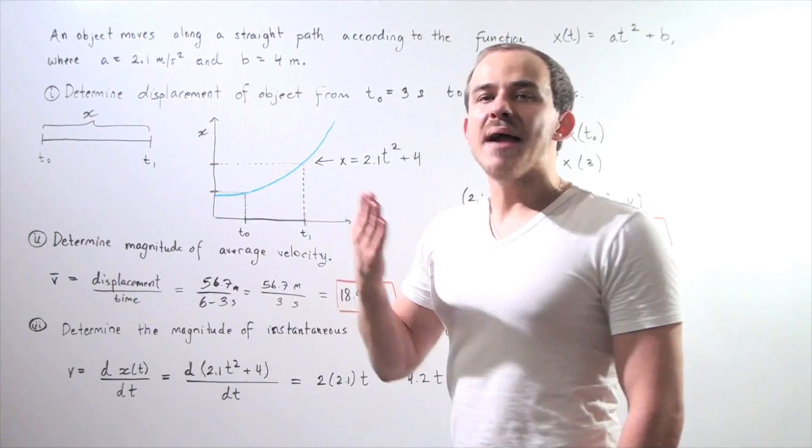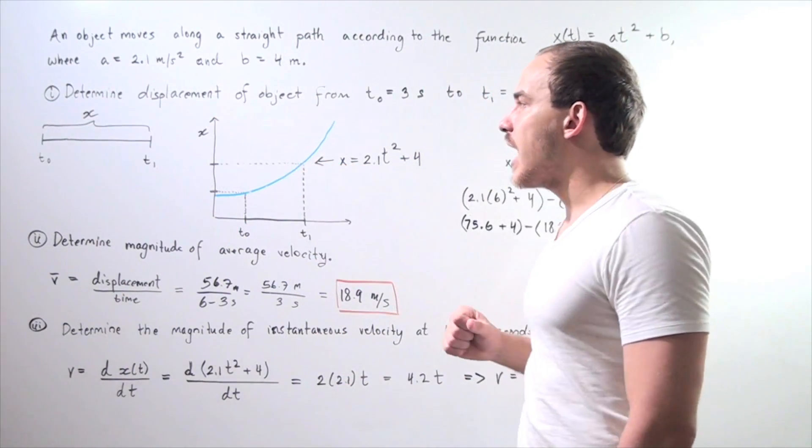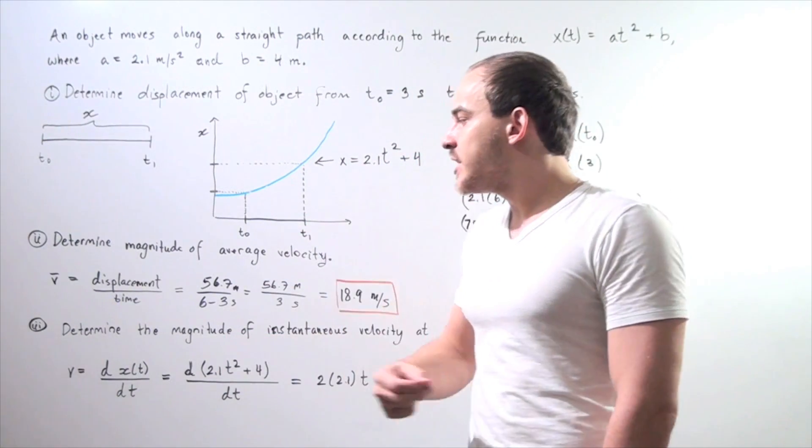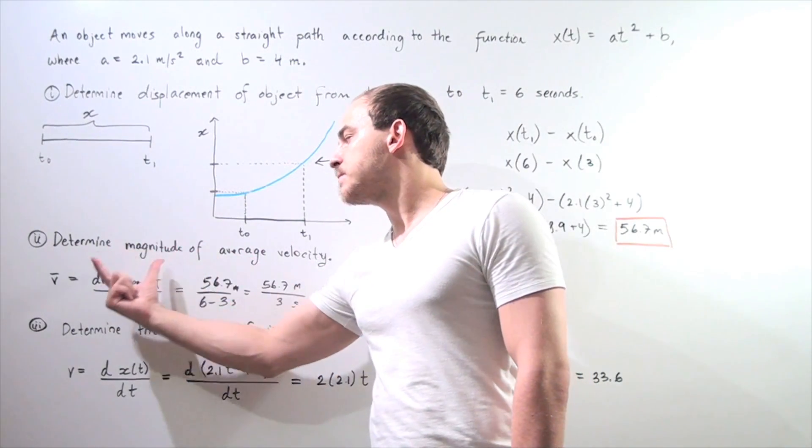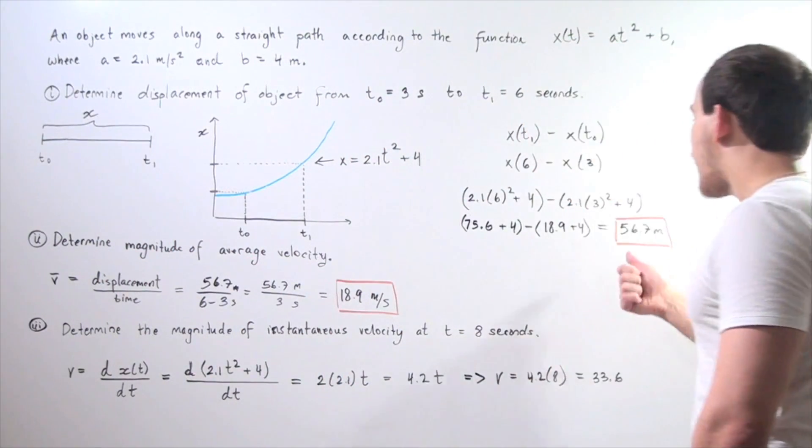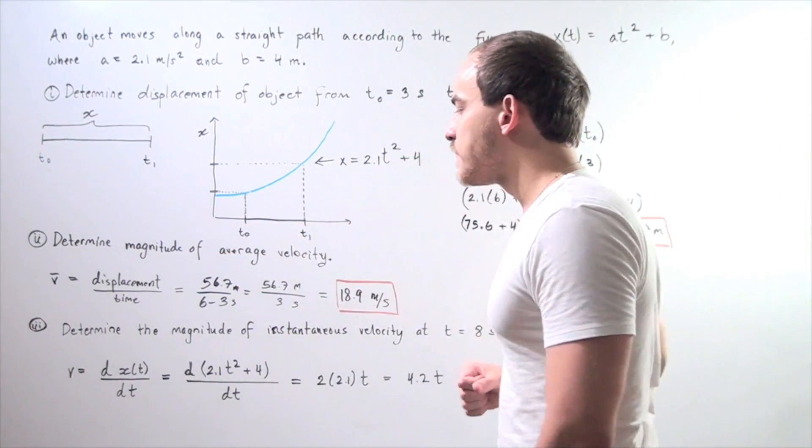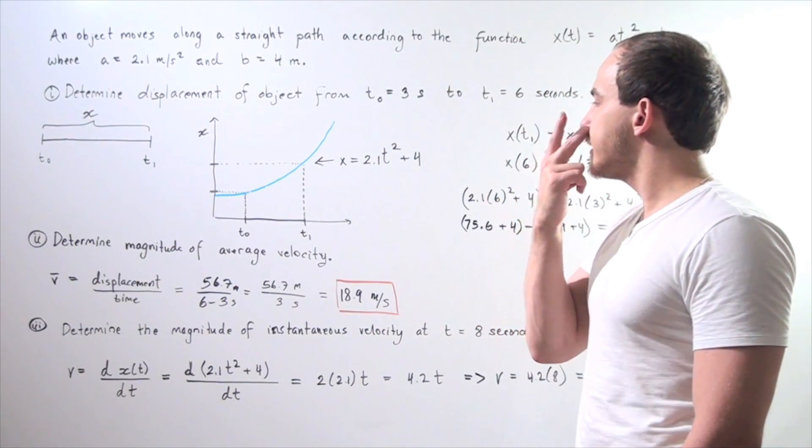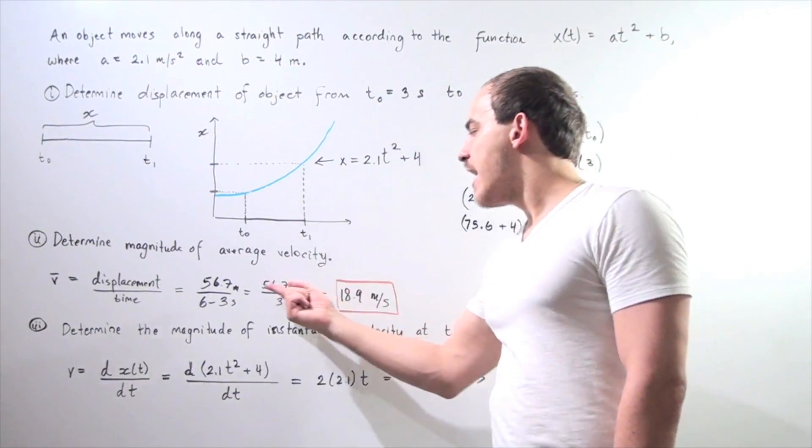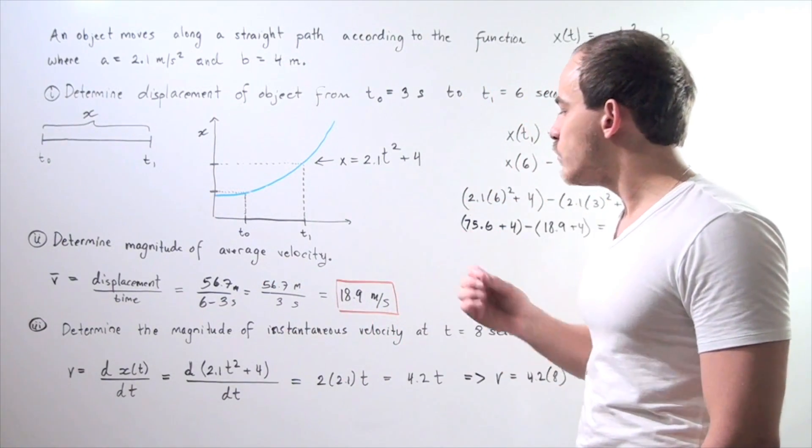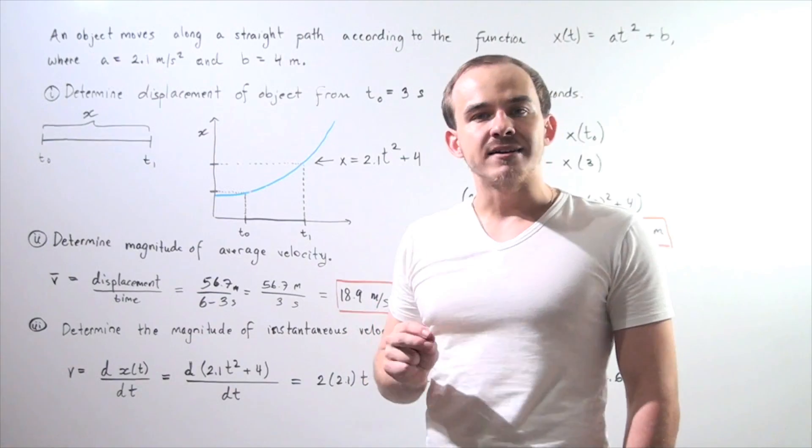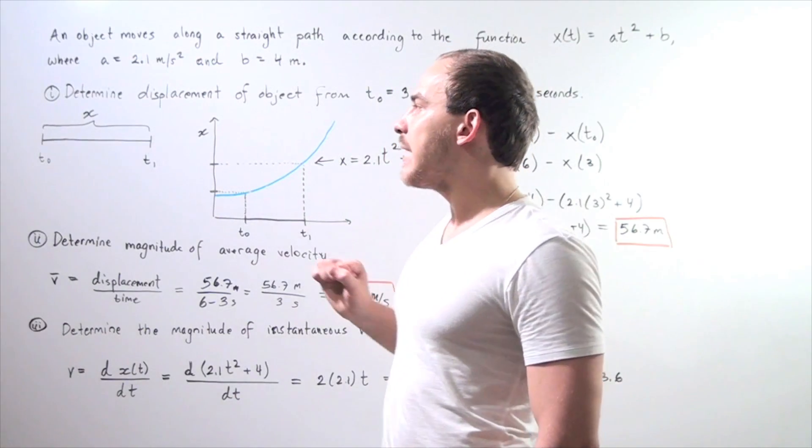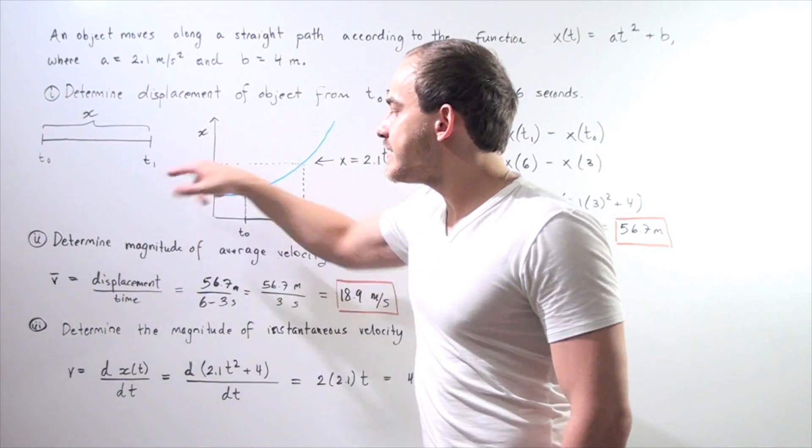Part 2i: Determine the magnitude of the average velocity from part i. We found our displacement and we know our change in time. Because the formula for average velocity is displacement divided by time, we take our value from part i and divide by 6 seconds minus 3 seconds. We get 56.7 divided by 3, which equals 18.9 meters per second. That is our average velocity between the time interval of 3 seconds and 6 seconds.